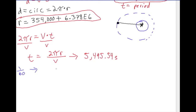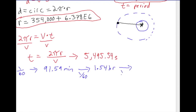Converting 5,495.54 seconds: dividing by 60 gives 91.59 minutes. Dividing by 60 again gives 1.54 hours. Dividing by 24 gives 0.064 days for the satellite to orbit the Earth. Later in this class, we'll look at geosynchronous satellites, and the orbital period we get there will be a pretty interesting number relative to the Earth.